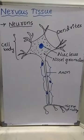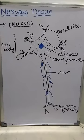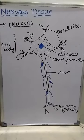Hello students. In the last video we discussed about muscular tissues, which includes mainly three types: skeletal muscle fiber, cardiac muscle fiber, and smooth muscle fiber. In this class, let us discuss about nervous tissues — the last type of animal tissue.